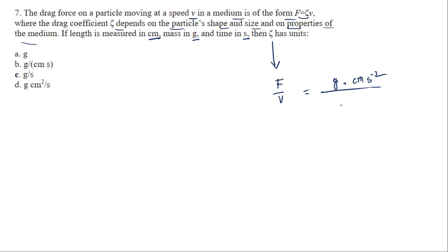And velocity V is in centimeters per second. So it becomes grams times cm/s² divided by cm/s. Centimeters cancel out, giving us gram per second (g/s). So option C is correct.